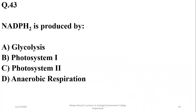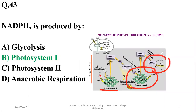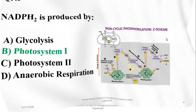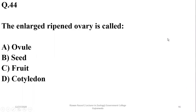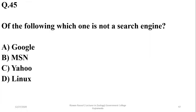Question 42: NADPH2 is produced by photosystem I. Photosystem II uses the associated enzyme NADP reductase to produce NADPH2. Beta is the answer. Question 43: A ripened ovary is called a fruit. Question 44: Which of the following is not a search engine? Linux is an operating system, not a search engine. The other three are famous search engines.